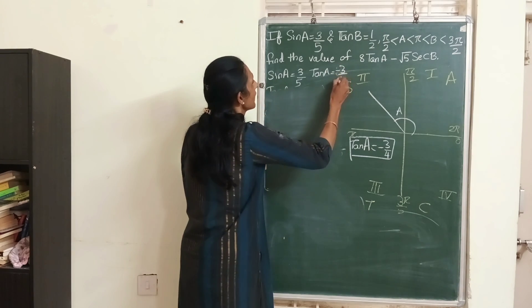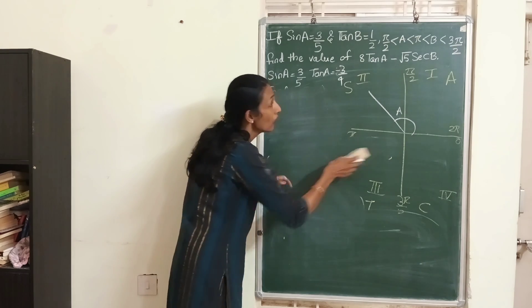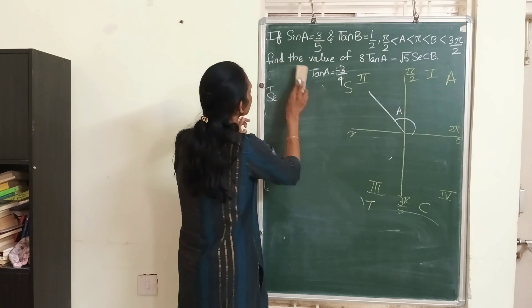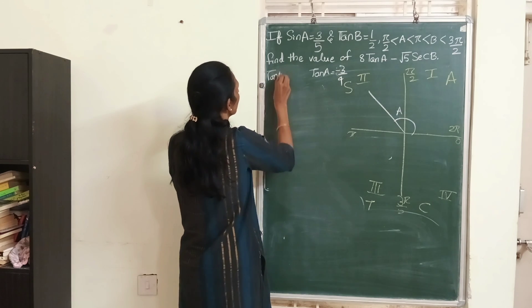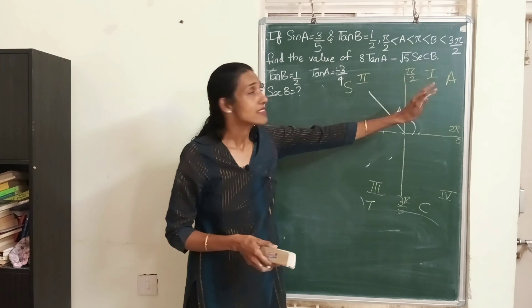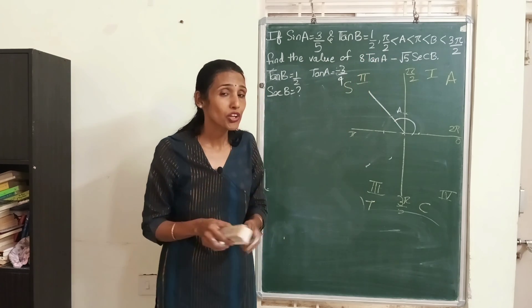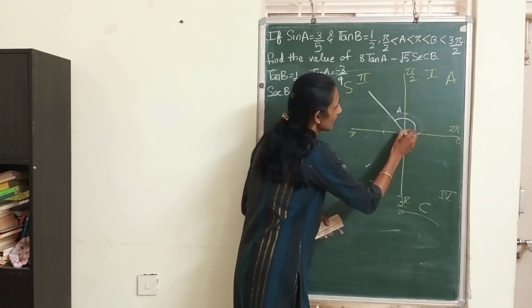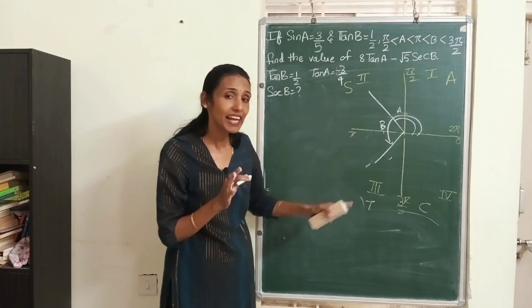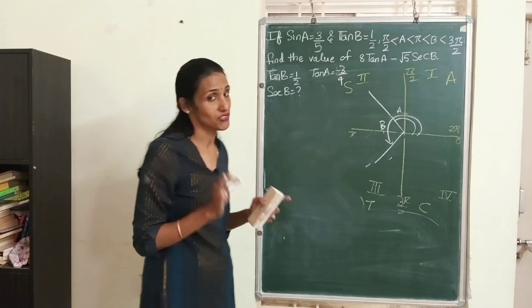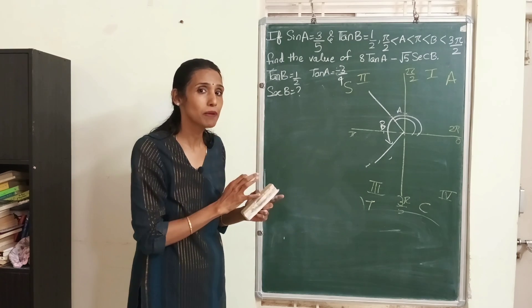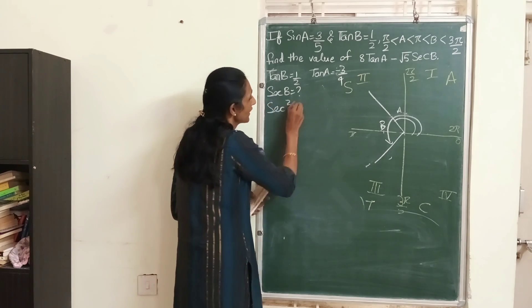Now I still need to find sec B. It is given that tan B = 1/2, and B is between π and 3π/2, so B lies in the third quadrant. In the third quadrant, only tan and cot are positive — all other ratios are negative. Let's keep that in mind.